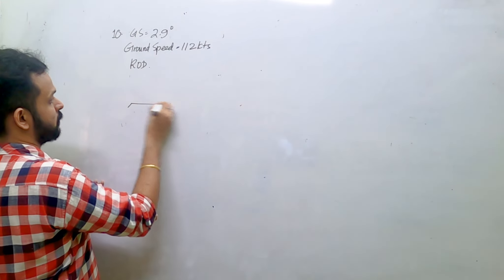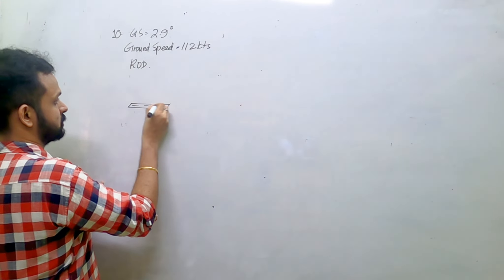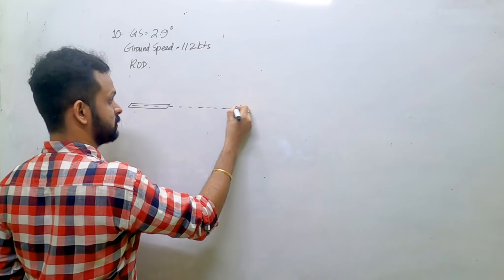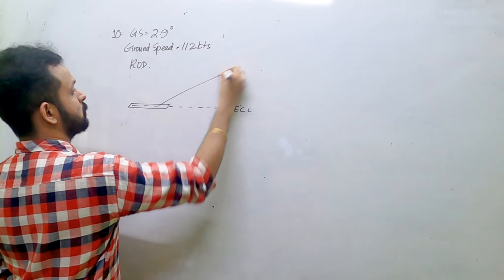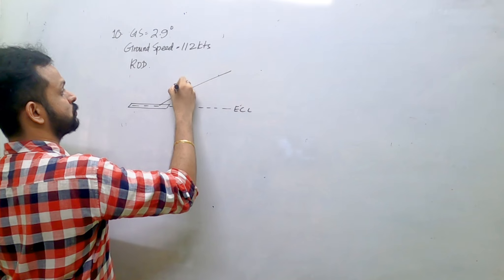So let's draw the runway here, the centerline. This is the centerline. Your glide slope is 2.9 degrees, this is the glide path.